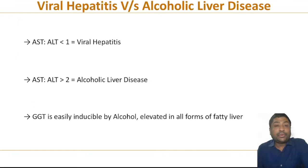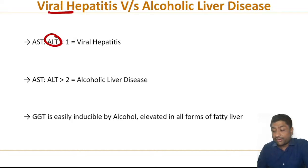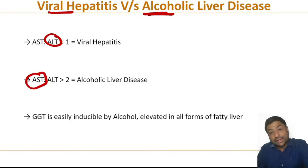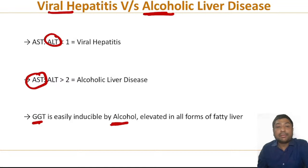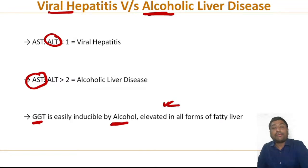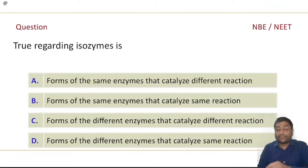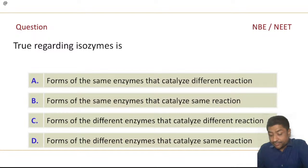Comparing: in viral hepatitis, ALT will be more elevated; in alcoholic liver disease, AST will be more elevated; and GGT is easily inducible by alcohol so it is elevated in all forms of fatty liver. Another question for exam purposes: which of the following is true regarding isoenzymes? Type your correct answer in the comment.